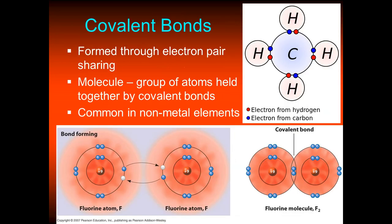Covalent bonds are formed when electrons are shared. Methane (CH₄) is one of the most commonly burned natural gases for energy. The carbon brings one electron to the table and each hydrogen brings one electron, so they share that pair of electrons — giving methane four covalent bonds. Anything held together by covalent bonds is called a molecule.